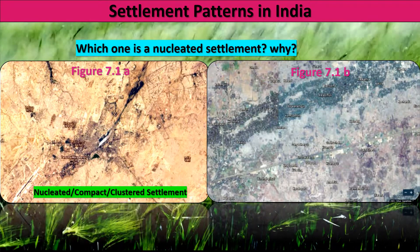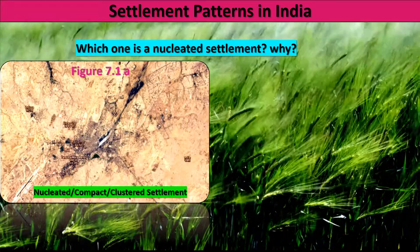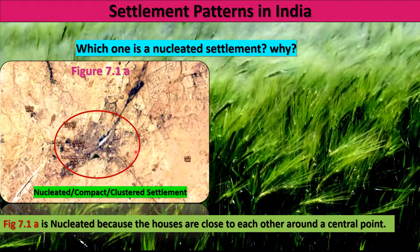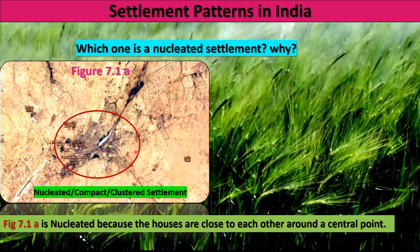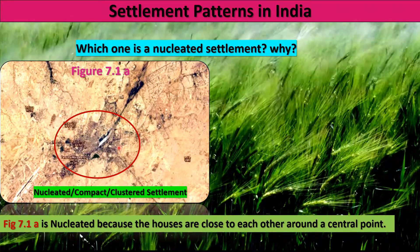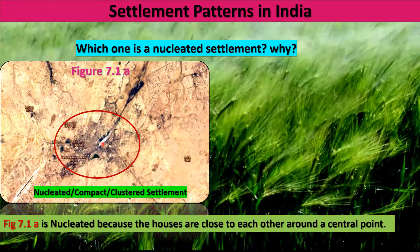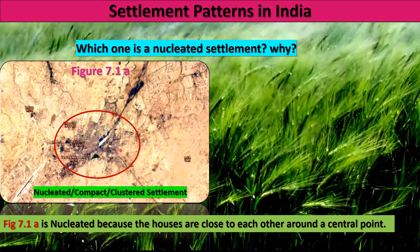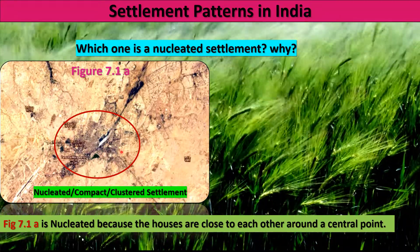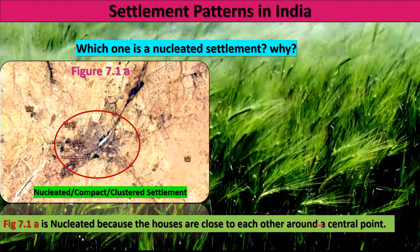The second question asks which one is a nucleated settlement and why. Figure 7.1a represents a nucleated type of settlement. To understand why, we relate it to science — just as a nucleus is surrounded by electrons and protons in an atom, in a nucleated settlement the houses surround a central point such as a river, temple, or commercial center. Figure 7.1a is a nucleated settlement because the houses are close to each other around a central point.